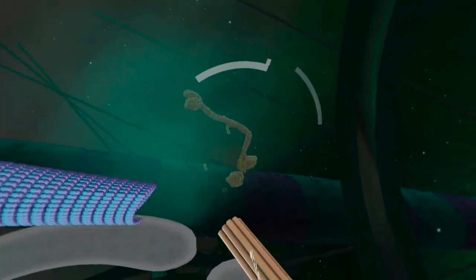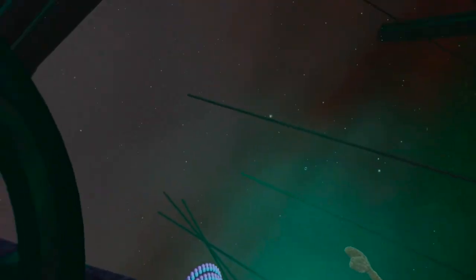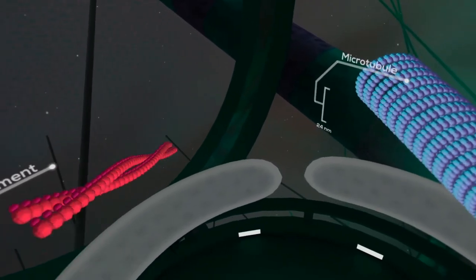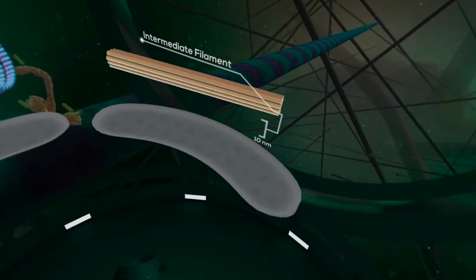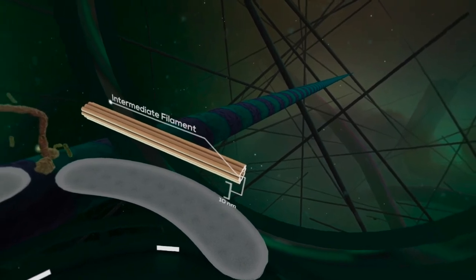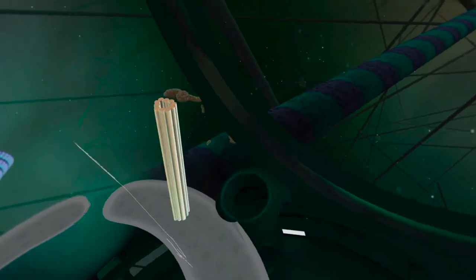Energy is available in the cytoplasm in the form of ATP molecules. ATP binds with kinesin and propels it forward. With each step the kinesin takes, it binds with an ATP molecule and releases an ADP molecule.